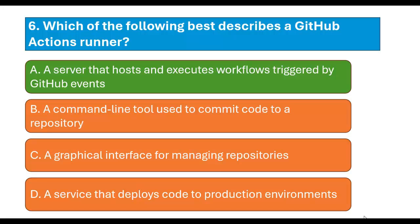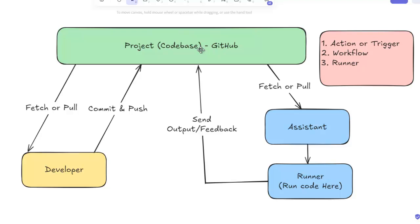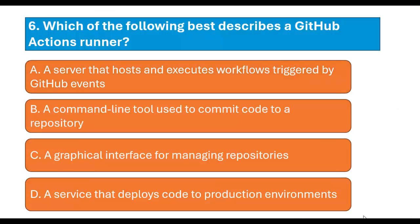Let's discuss in detail. Think of the main code base as the core project. The developer provides a set of tasks for an assistant to perform after a trigger occurs. The tasks listed in the workflow are performed on the assistant's system, which is called a runner. You can think of the runner as a virtual machine where the assistant executes all the steps provided in the workflow. A runner is a server that hosts and executes workflows triggered by GitHub events.